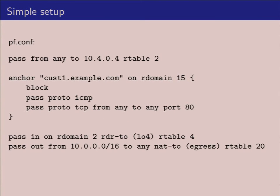Here is an example of some PF rules you can use. The first rule: any traffic that comes in being sent to this IP address, we want to move it to routing table number 2, which would generally be part of routing domain number 2. This is how you would move traffic from one routing domain to another. In this case it's not doing any address rewriting, so the destination and source IPs would need to be unique on both sides, otherwise systems will get confused.